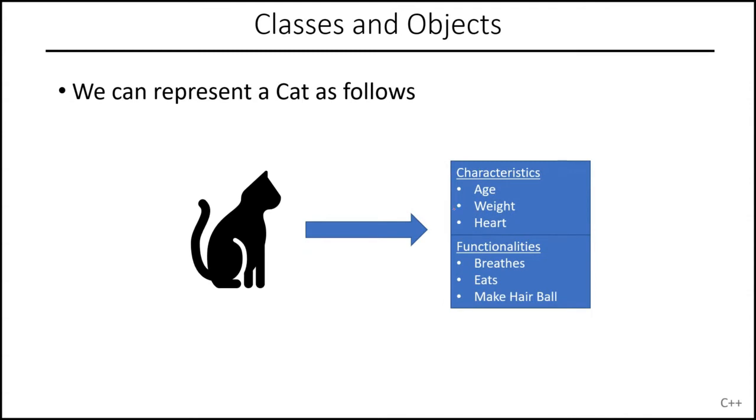Now, here's another one. Here's a new one. Here we have a cat. The cat, we can also describe it using the same concepts, data members and function members, characteristics and functionalities. The first thing is, of course, it also has certain characteristics, has an age, has a weight. It also has a heart.